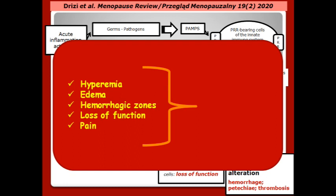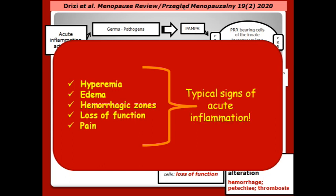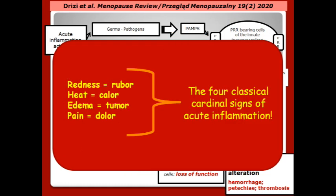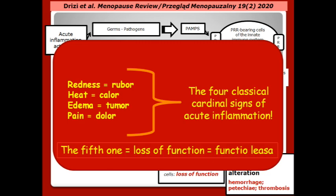And so, hyperemia, edema, hemorrhagic spots, loss of function, and pain — all these are typical signs of acute inflammation, and this has been acknowledged in all references of immunology for centuries. Redness, heat, edema, and pain: these are the four classical cardinal signs of acute inflammation, the fifth one being loss of function.